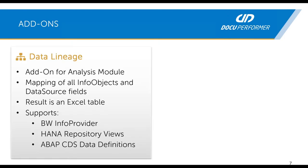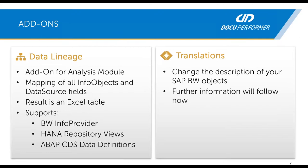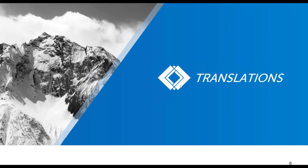Then the add-ons. We offer two add-on tools. The data lineage is an add-on for the analysis module, and you can create a mapping of all info objects and fields up to the data source. The results are displayed in an Excel table. It's available for BW info providers, for HANA repository views and for ABAP CTS data definitions. And last but not least, Translations — the main topic of this webinar. Now we will take a closer look at this add-on, starting with the theoretical facts.